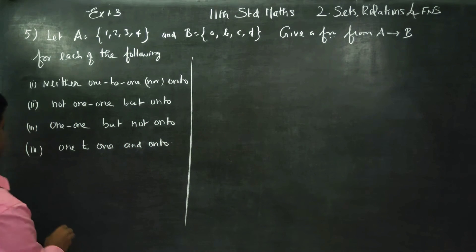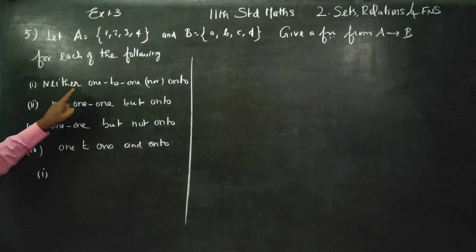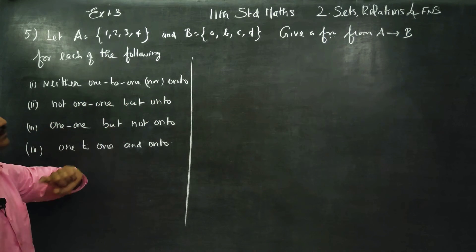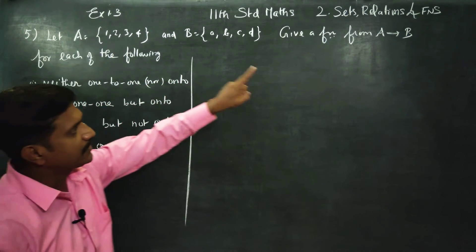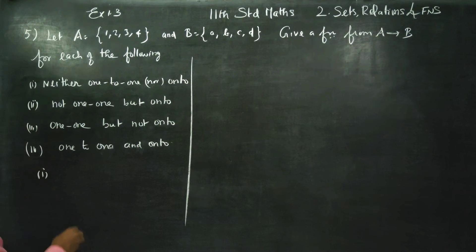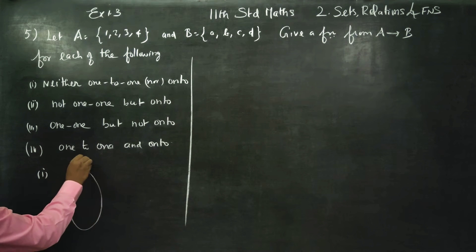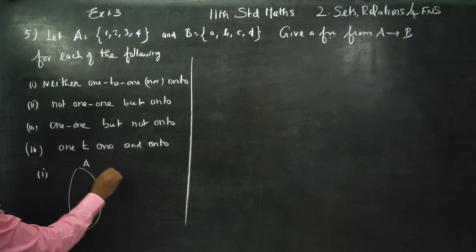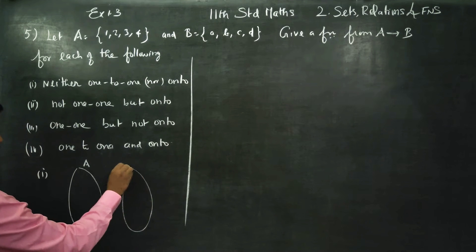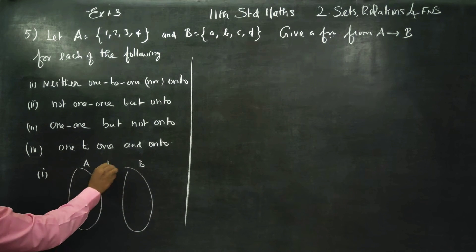I will start with the first one: neither one-one nor onto. The rule is A to B. A set is full, B set is full. You have to define a function F.